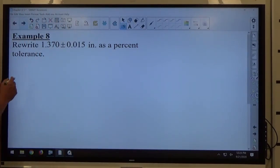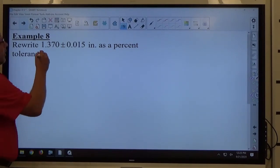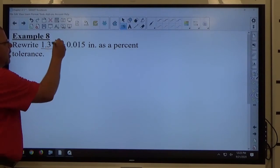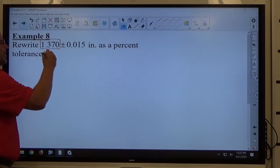When you're looking at a percent tolerance, you're looking at how much you're willing to be off by on a measurement. The number in front of the plus-minus symbol is the accepted measurement.